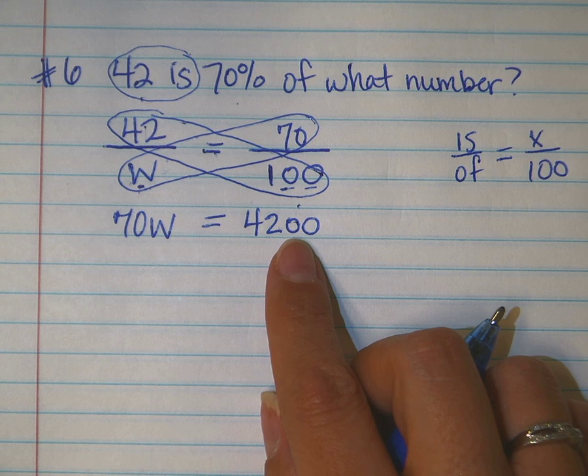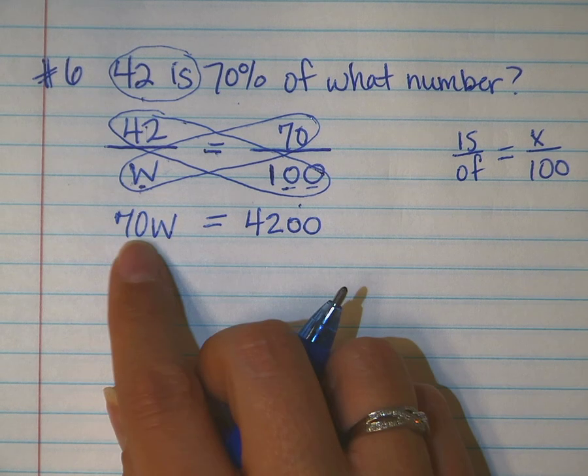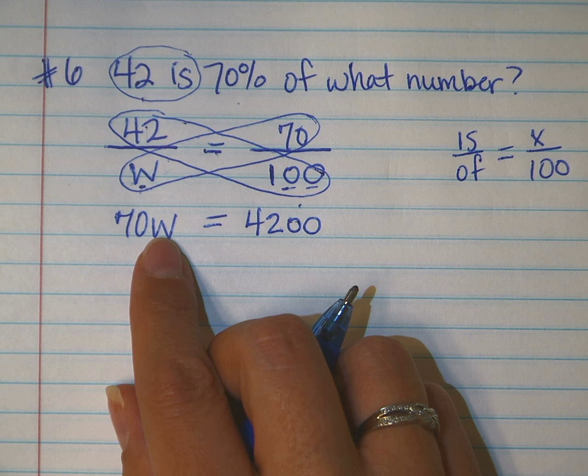At this point, because it's algebra, the goal is to isolate or get alone that variable of W.